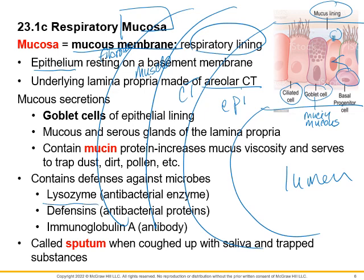The mucous membrane also defends against microbes. It has bacterial enzymes that can break down the cell wall of a pathogen — bacteria. Defensins can either stop the pathogen from invading or break the cell wall of the pathogen. IgA — immunoglobulin A — is also secreted by the mucous membrane. It helps stop infection, stopping pathogens from being able to infect the epithelial lining. So there are lots of defense mechanisms here.